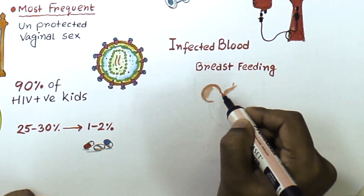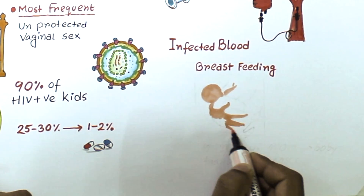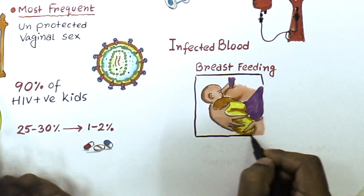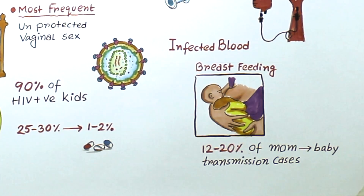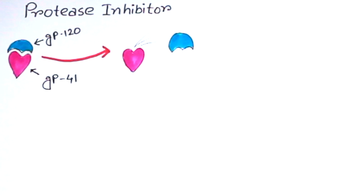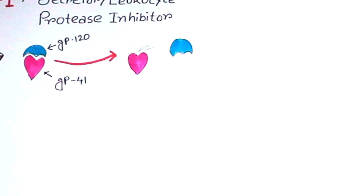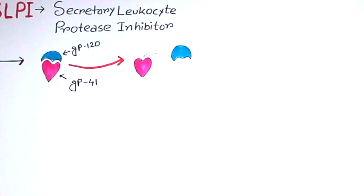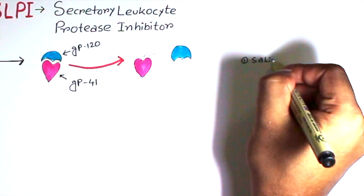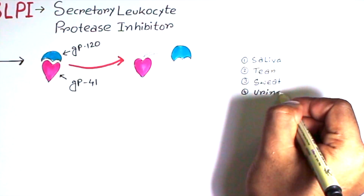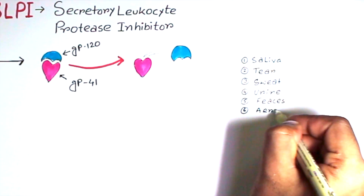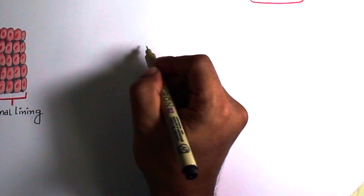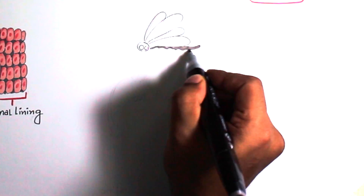The last mode is breast milk, accounting for 12 to 20 percent of transmission cases, possibly because of the delicate gastric mucosal layer in newborn babies. HIV is not transmitted through sharing plates during eating or sharing public toilets, as it is not transmitted through saliva, tears, sweat, urine, feces, or aerosol.